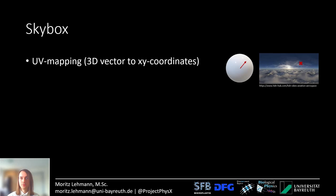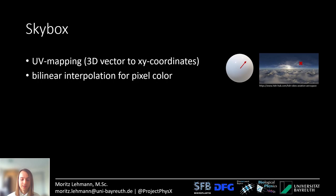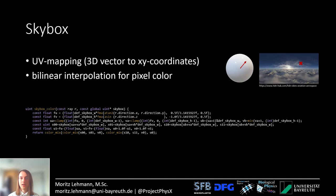For the skybox I use UV mapping, which transforms a 3D vector to xy coordinates on an image plane, and then I do bilinear interpolation to get the pixel color. This wraps the image around at infinite distance, so every ray that hits the skybox gets a color associated with it. The corresponding OpenCL code uses one atan2 and one arcsine.